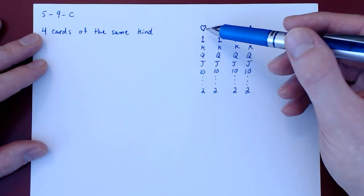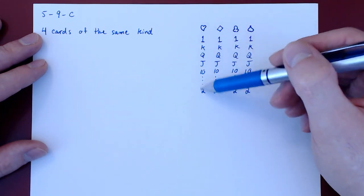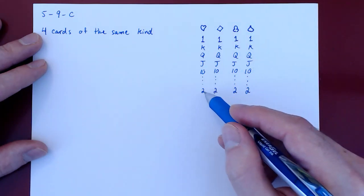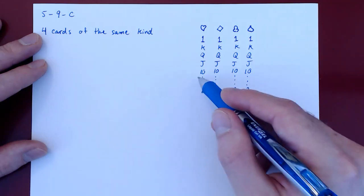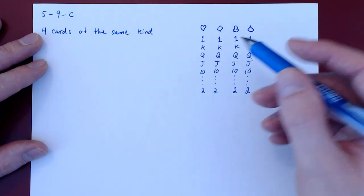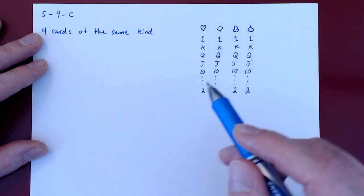So the setup is that we have a regular deck of 52 cards. We've arranged the cards here according to their suits: hearts, diamonds, clubs, and spades, and then in terms of their kinds: twos, threes, tens, up to king.